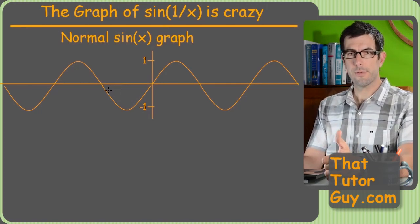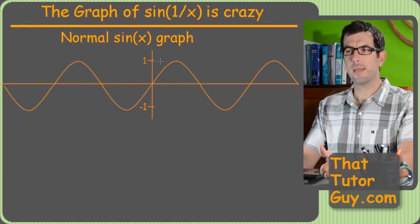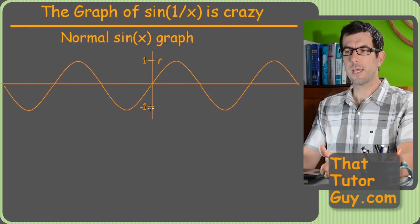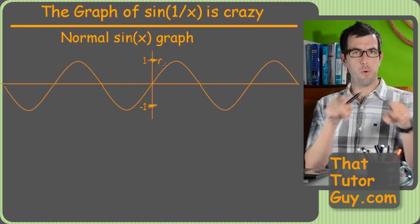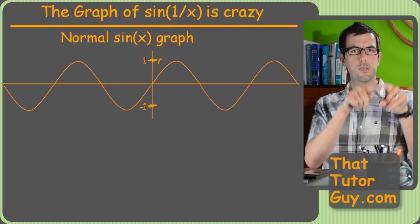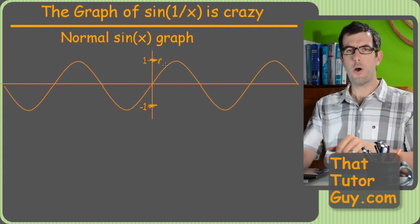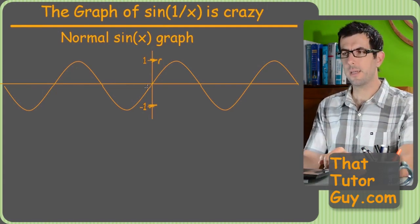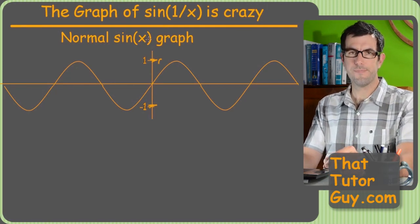As a reminder, the graph of sine or cosine of x is basically just a squiggly line that goes between negative 1 and 1 forever. And as you go out from the origin sideways, all the way to infinity, this thing just keeps going — wavy all the way out to infinity. But that's just sine x.